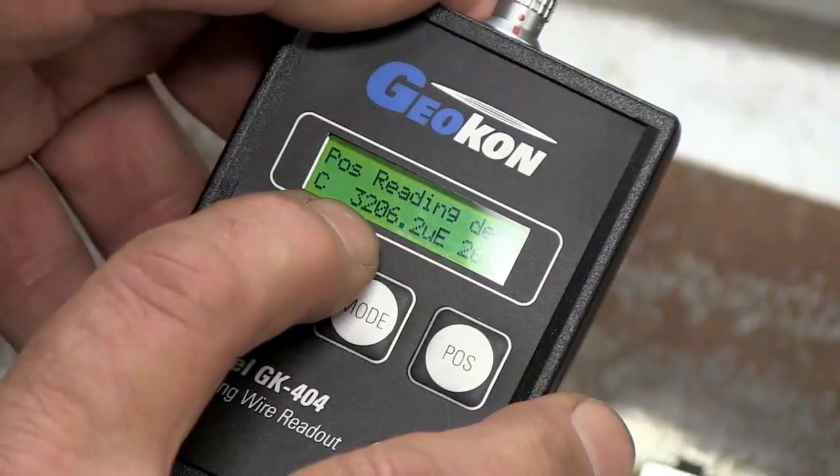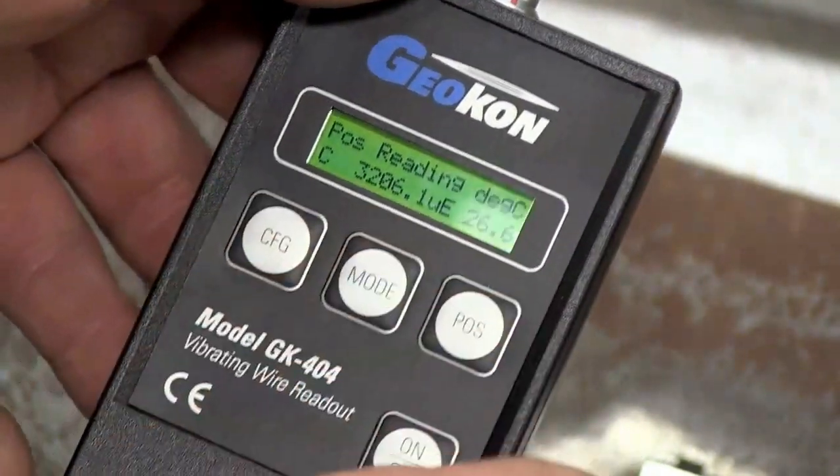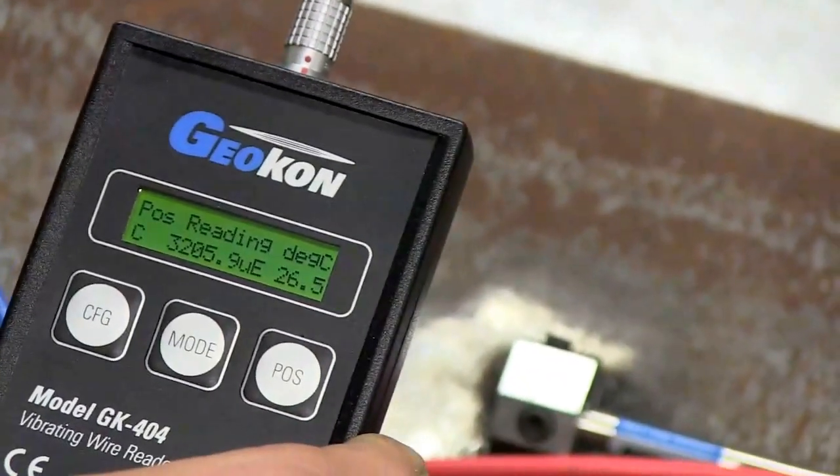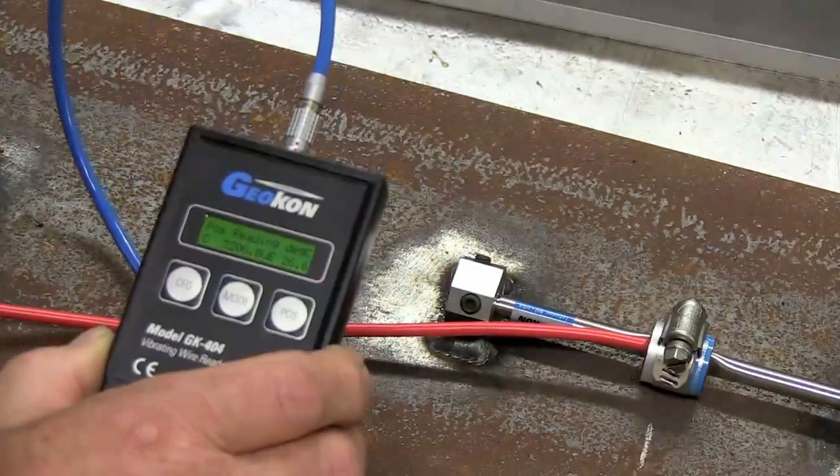The gauge comes from the factory pre-tensioned at about 3,000 microstrain. This is reading 3206. 3,206 microstrain. For a mid-range position, it's about 2,500 microstrain for this gauge.